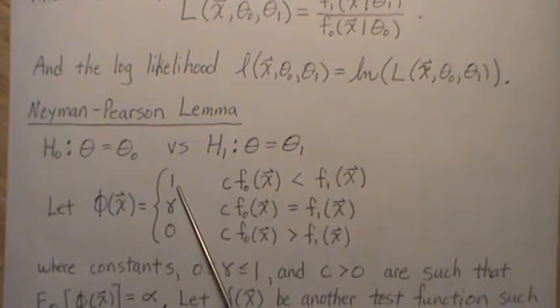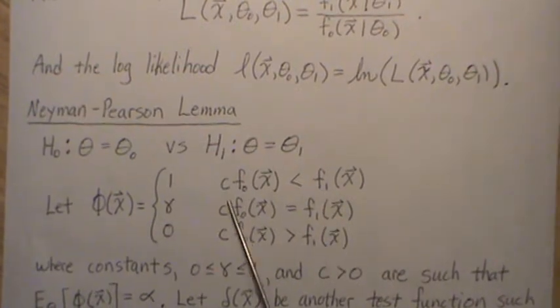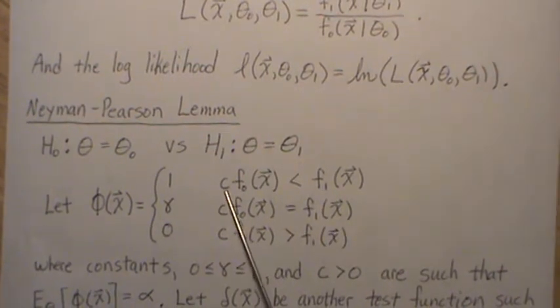We set up our test function this way: it takes on the values 1, gamma, and 0. It's a 1, meaning we reject the null hypothesis and accept the alternative if this relationship is true for some positive value c.